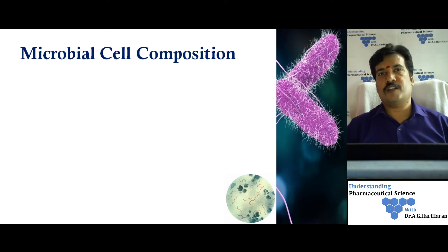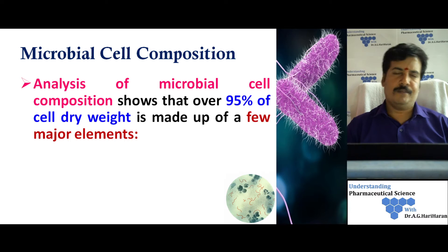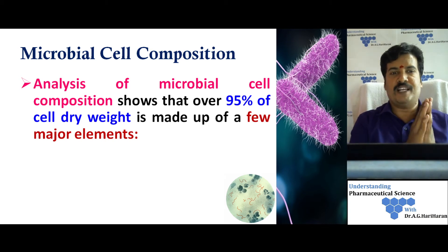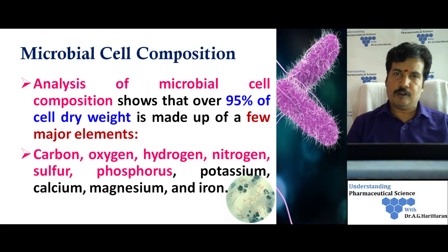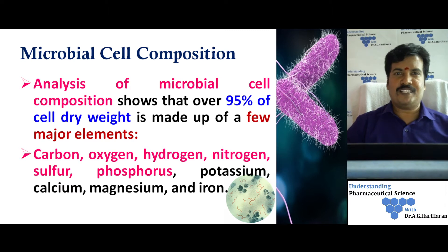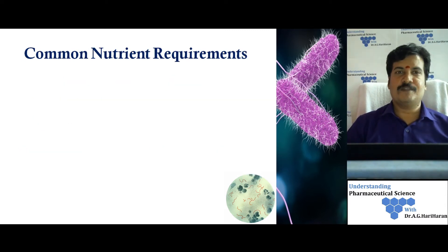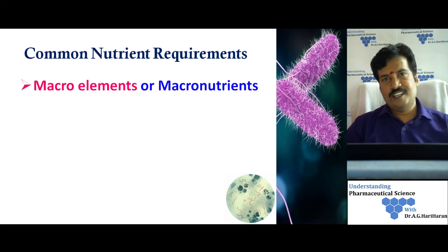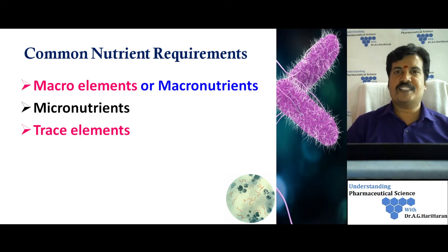To understand what nutrients are required for a microorganism, we can analyze the microbial cell composition to estimate which elements are needed. By analyzing various microbial cells, it has been shown that 95% of the dry weight of all cells is made up of only a few chemical elements — carbon, hydrogen, oxygen, nitrogen, sulfur, and phosphorus — present in large quantities, and magnesium, potassium, calcium, and iron in smaller quantities. We can divide nutritional requirements into four categories: macronutrients, micronutrients, trace elements, and growth factors.